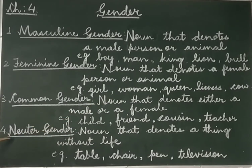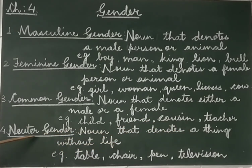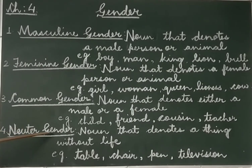Now the last kind is neuter gender. A noun that denotes a thing without life is said to be neuter gender. That means all non-living things belong to the group of neuter gender. For example,